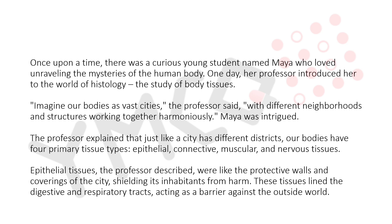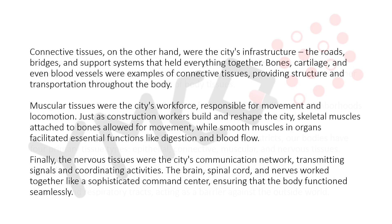Maya was intrigued. The professor explained that just like a city has different districts, our body has four primary tissues: epithelial, connective, muscular, and nervous tissue. Epithelial tissues were like the protective walls and coverings of the city, shielding its inhabitants from harm. These tissues line the digestive and respiratory tract, acting as a barrier against the outside world. Connective tissues, on the other hand, were the city's infrastructure — the roads, bridges, and support systems. Bones, cartilage, and blood vessels were examples.